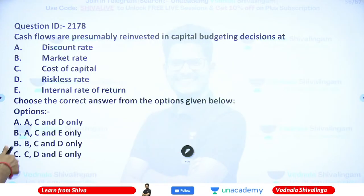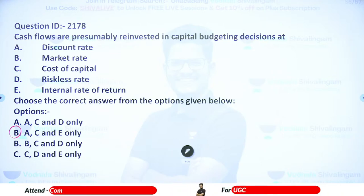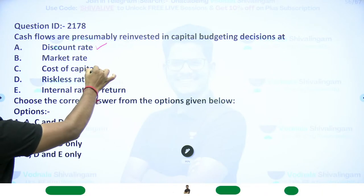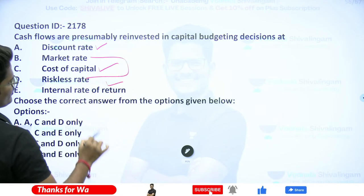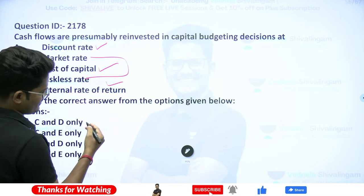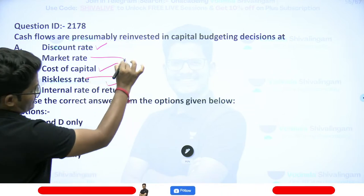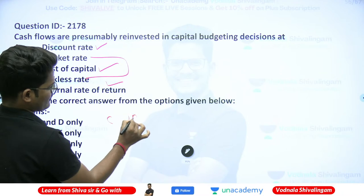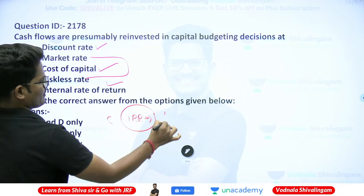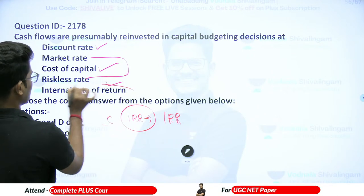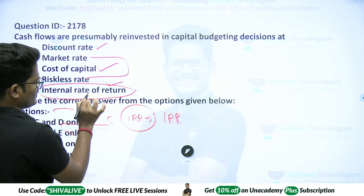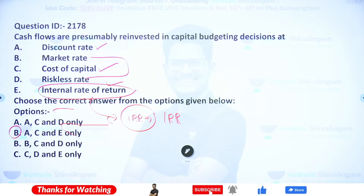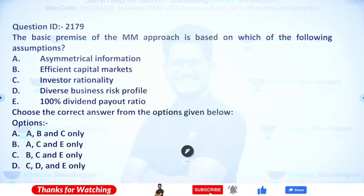Question 23: Cash flows are presumably reinvested in capital budgeting decisions at — answer is B — A, C, E: discount rate, cost of capital, and internal rate of return. Market rate and risk-free rate are not applicable. Generally, capital budgeting reinvestment is at the discount rate or cost of capital. In the IRR method specifically, reinvestment is assumed to be at the IRR itself, which is why IRR is also included as an answer.